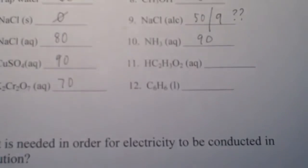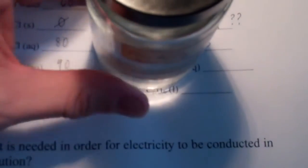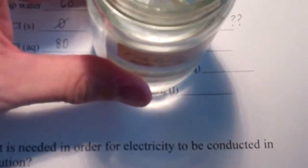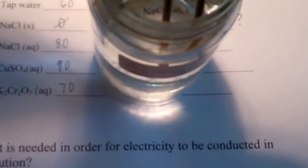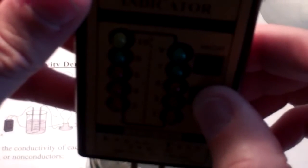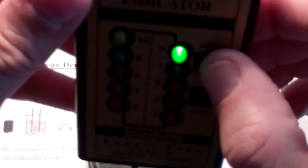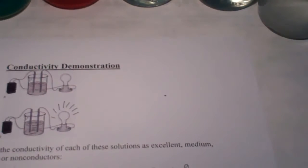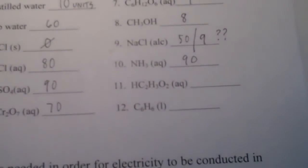Next up is acetic acid — I'm actually using white vinegar. Putting the conductivity meter in and pressing low: 10-plus. Pressing high, it's up to 9, giving 90 units — just like the ammonia. So acetic acid also has 90 units of conductivity, which means there must be some ions in there as well.